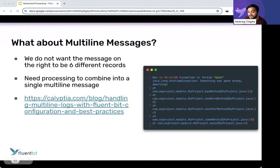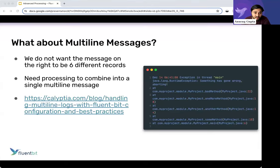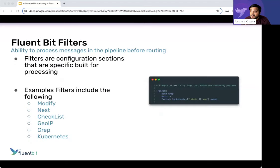Another big feature is multiline messages. When a stack trace comes in, you want to take it in as a single message. I would hate if the first line of a stack trace was separate from the second line, potentially thousands of records away. You need the context together to understand what happened and why something failed. Multiline parsing is built-in — Go, Ruby, Kubernetes — and you can define your own custom multiline parsers as well.